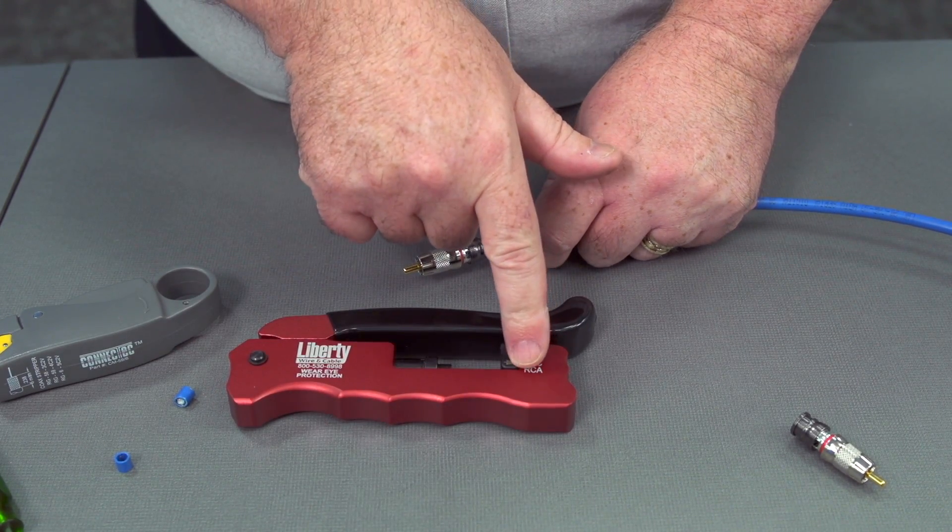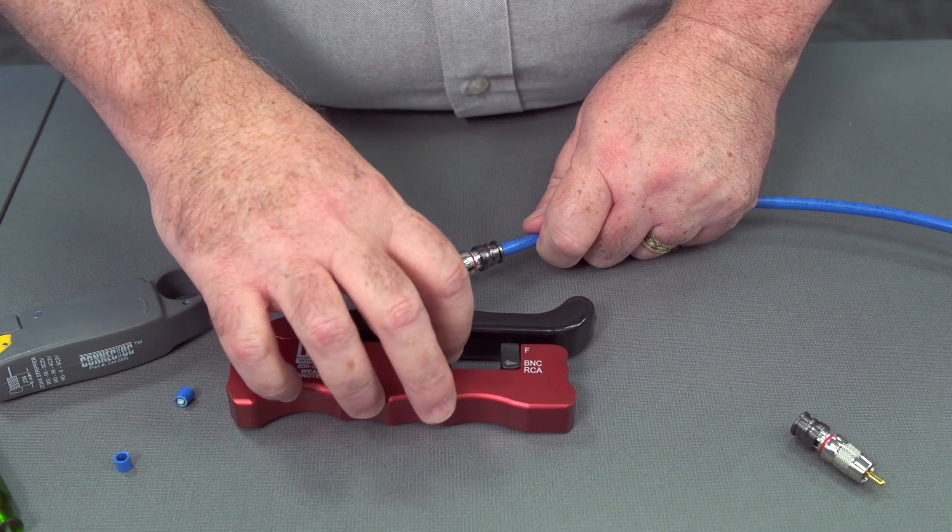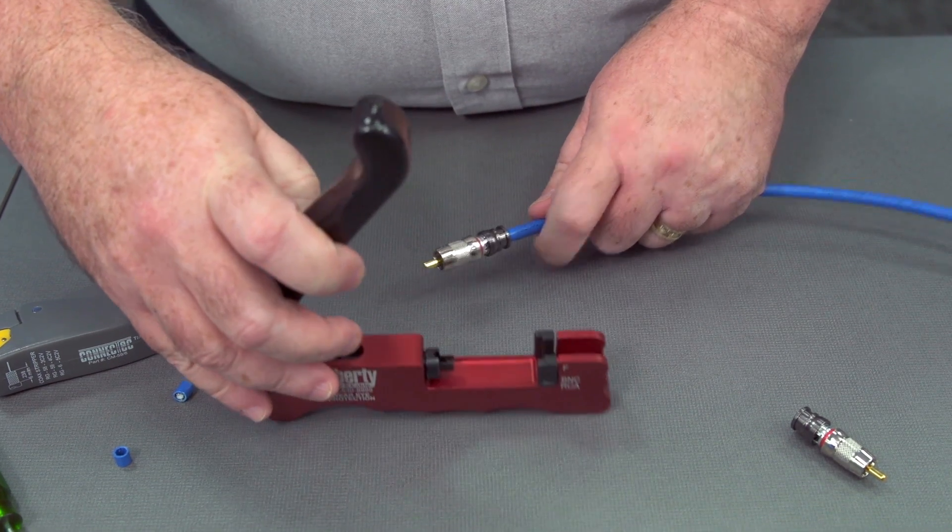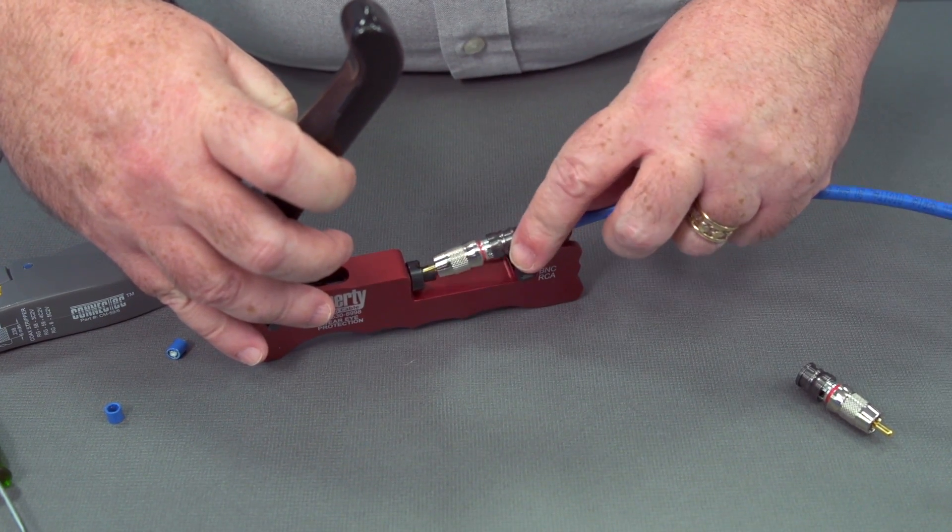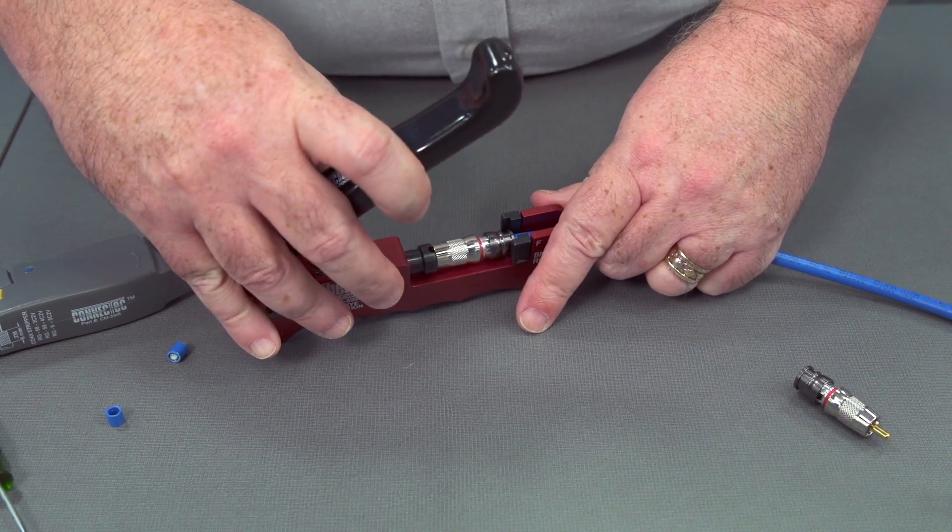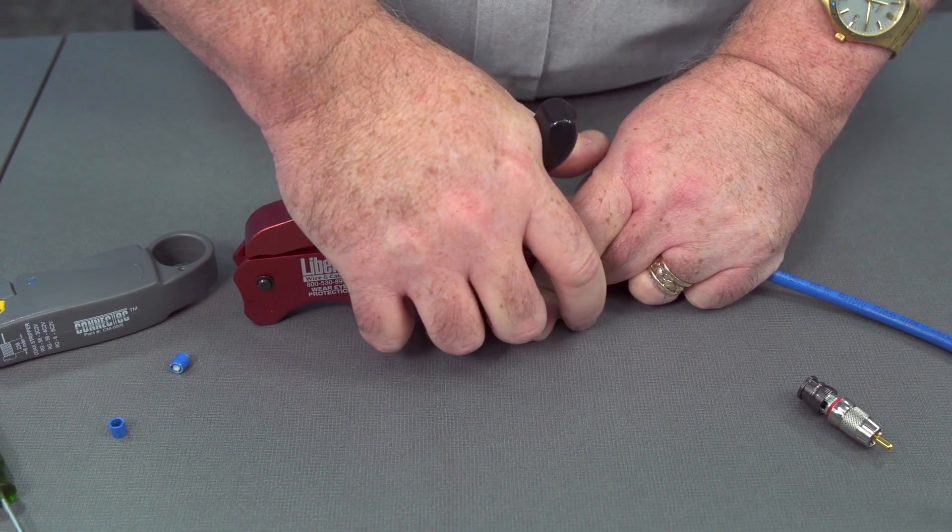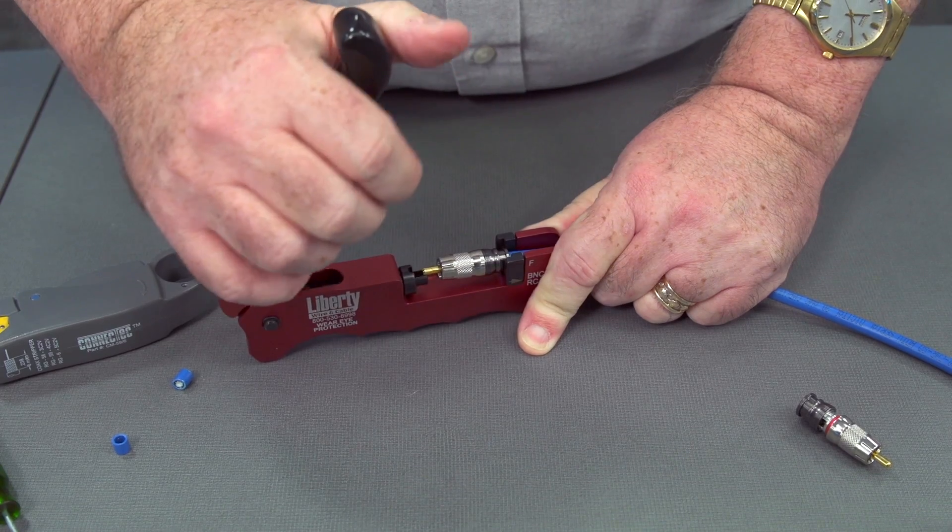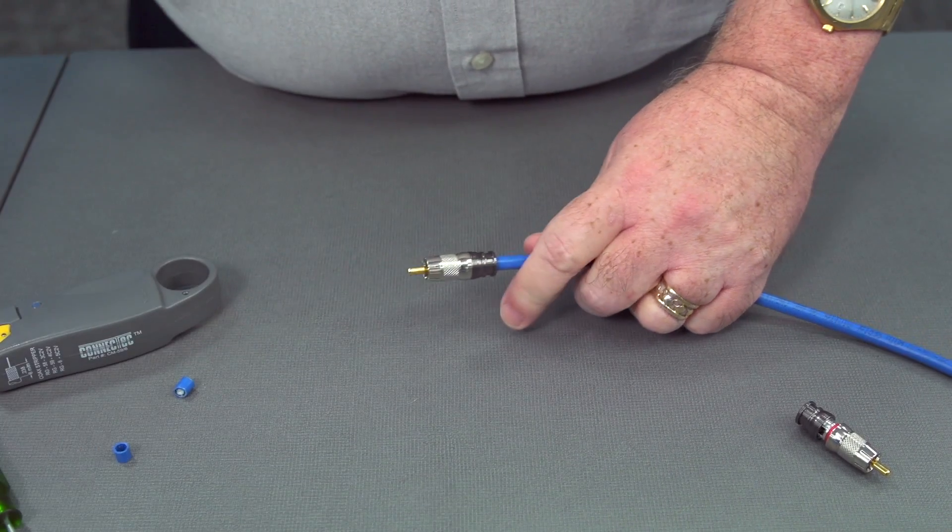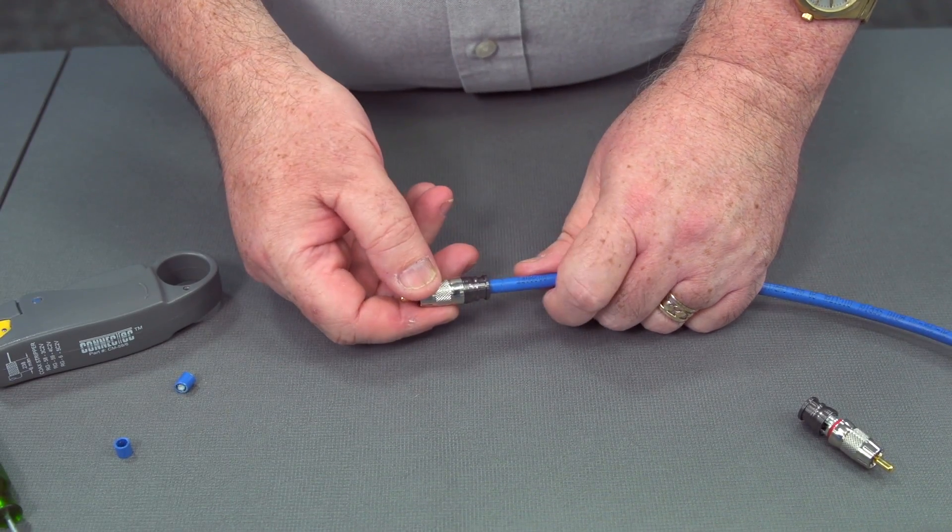We can see it's set for RCA. Open up the tool. Insert the connector. Push down on the lever. And there's our RCA connector.